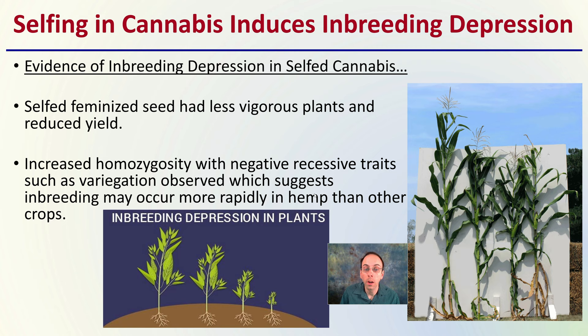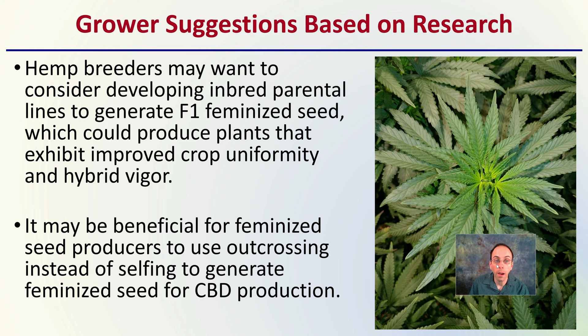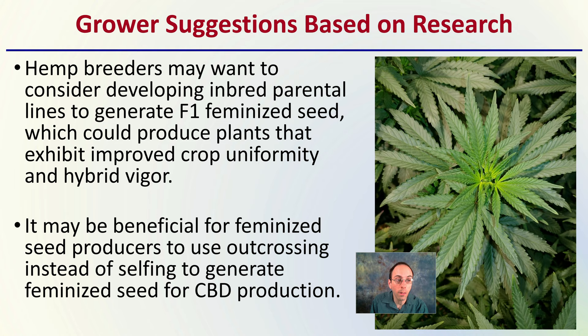Crossing different strains can increase yields. Crossing two different strains to maintain or increase heterozygosity could be a strategy to increase yields, and plants may be more uniform. If crossing within a strain is necessary, growers should consider using two different genotypes of the strain to produce feminized seed and maintain the strain name. Hemp breeders may want to consider developing inbred parental lines to generate F1 feminized seed, which could produce plants with improved crop uniformity and hybrid vigor. It may be beneficial for feminized seed producers to use outcrossing instead of selfing to generate feminized seed for CBD production.